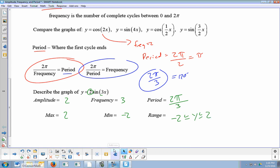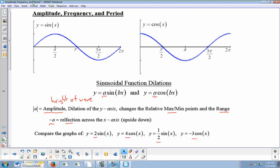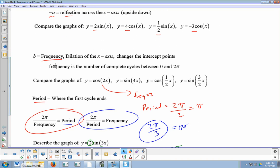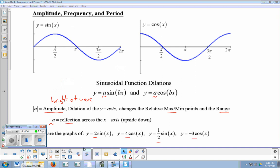All right, and we're going to expand on this as we bring in translations and other things. But that's what you need to know for now, how we can dilate these graphs and change their y-axis, which is changing their amplitude. And I could change their x-axis, which is changing their frequency. And connected to frequency is where that first wave will end, which is called period. All right, that's it. See you.